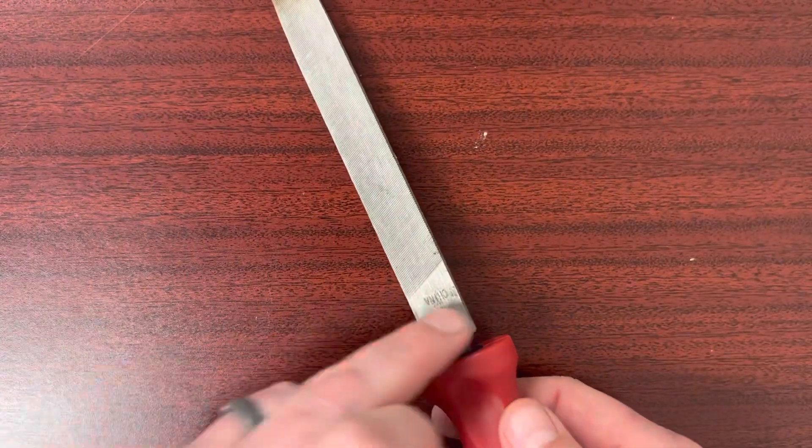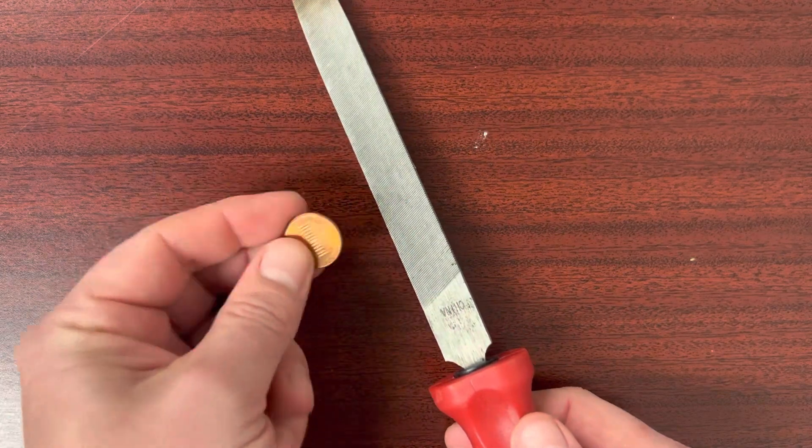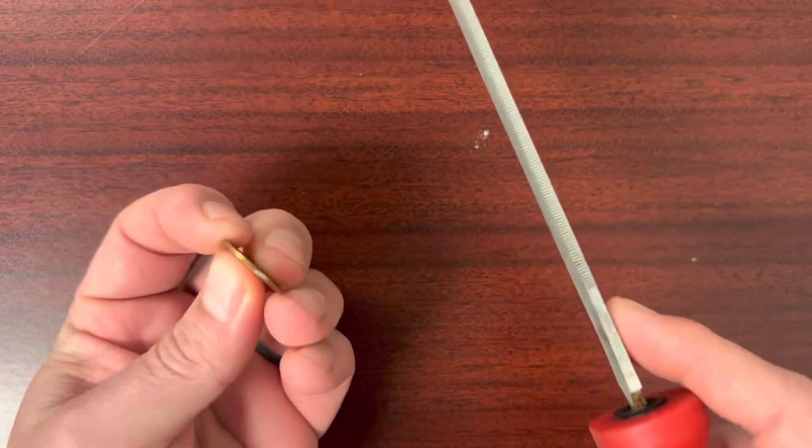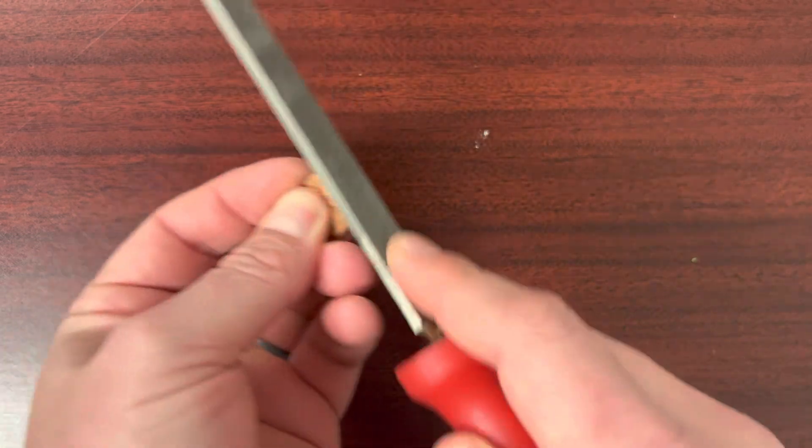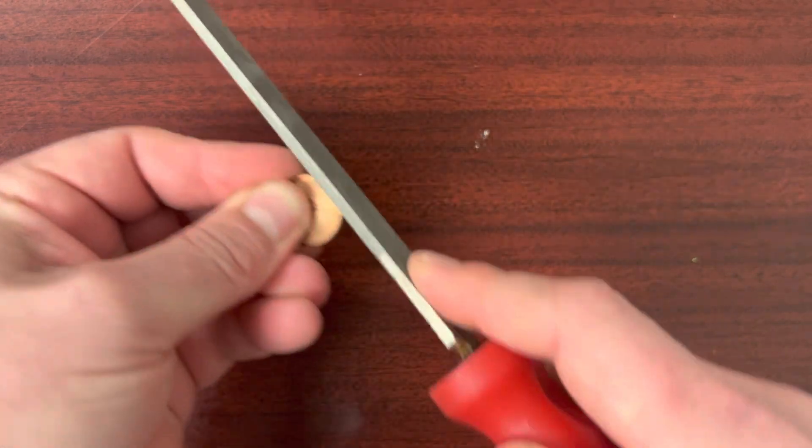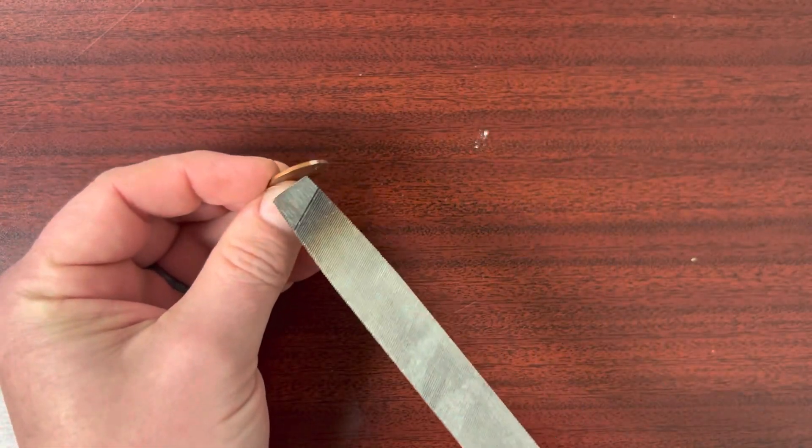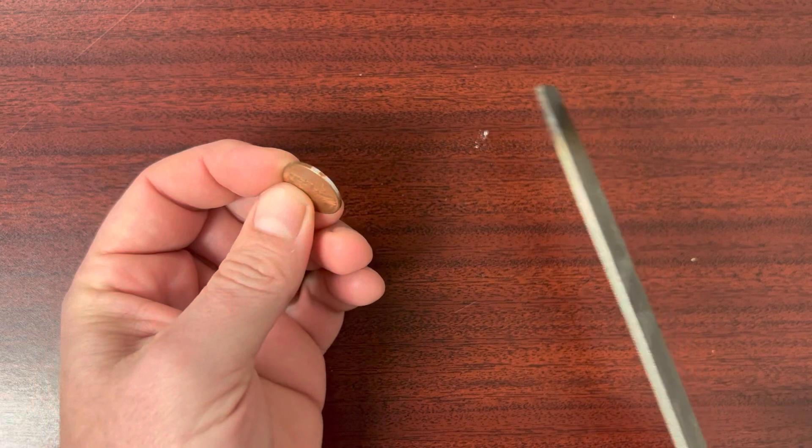For this reaction, I have a file and a penny. So I'm going to take the file and I'm just scraping the sides of the penny. And it went from being that coppery color to it looks like there's a silver.